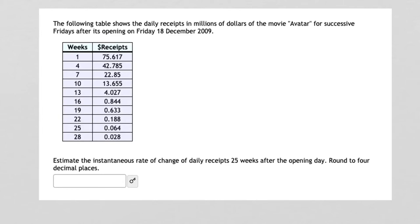Hello students. We've been talking about average rate of change and instantaneous rate of change, and this particular example deals with instantaneous rate of change. We're given a table that shows the daily receipts in millions of dollars of the movie Avatar for successive Fridays after its opening on Friday the 18th of December 2009. We are asked to estimate the instantaneous rate of change of daily receipts 25 weeks after opening day. Round our answer to four decimal places.